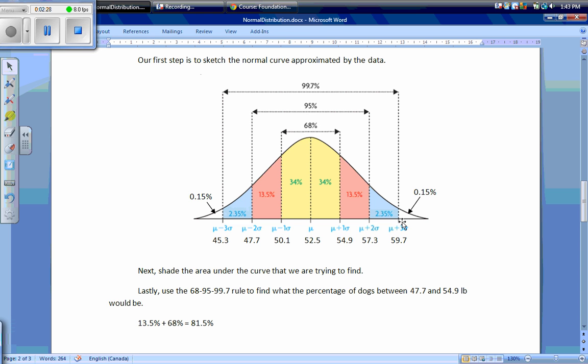Next we need to shade the area under the curve that we're trying to find. We are trying to find between 47.7 and 54.9 pounds. So this is the area that we're trying to find under the curve.